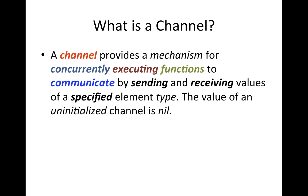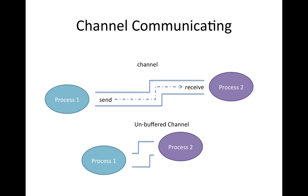You might still want those functions to communicate. The idea is to write your functions in such a way that they don't depend on any global state where one messes up the other. But if they need to exchange or work on the same data, you can use channels. So here's our channel — we have two processes, or concurrently executing functions.